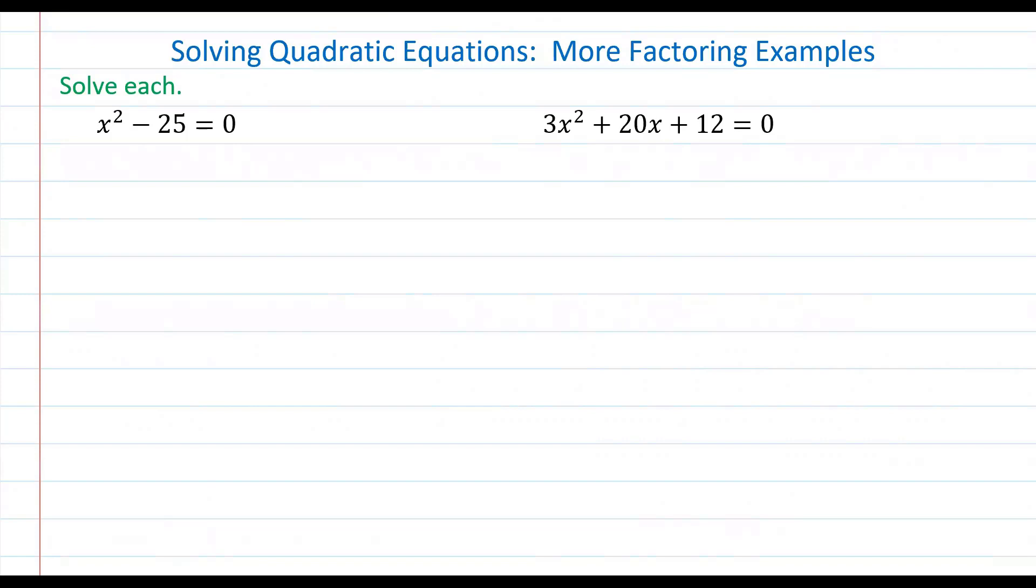Some of you might notice that this can be rewritten as x squared minus five squared, and so the left side is actually a difference of squares. A difference of squares expression means that we can factor it as x plus five times x minus five.